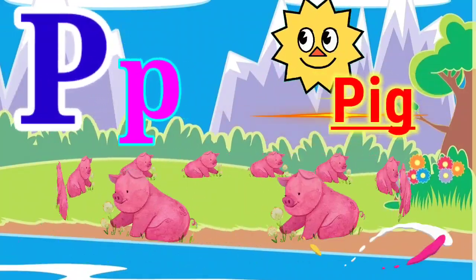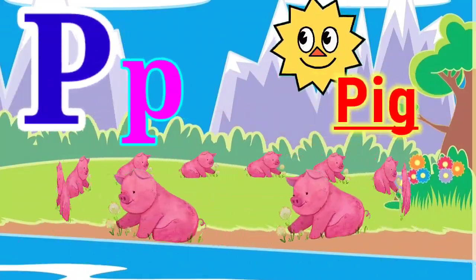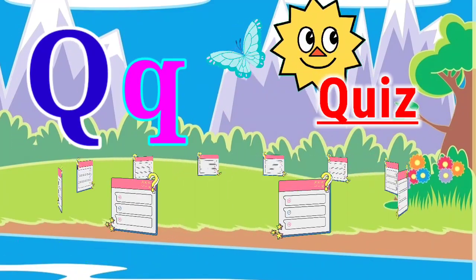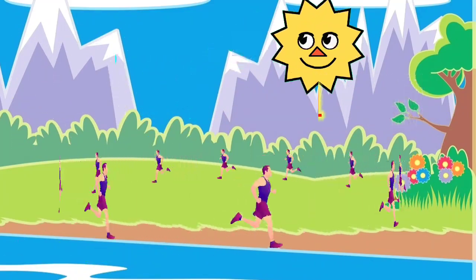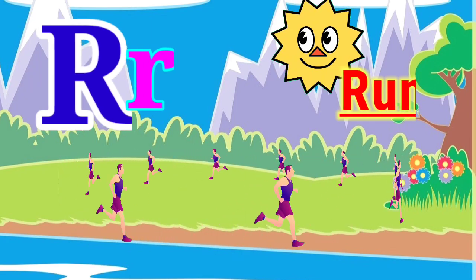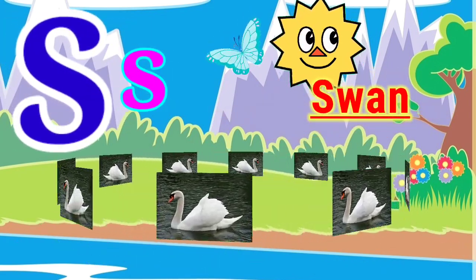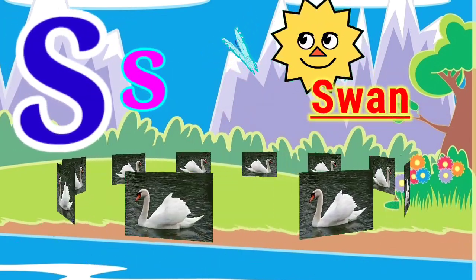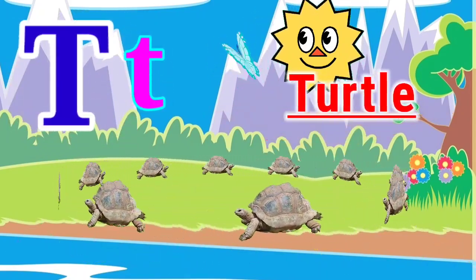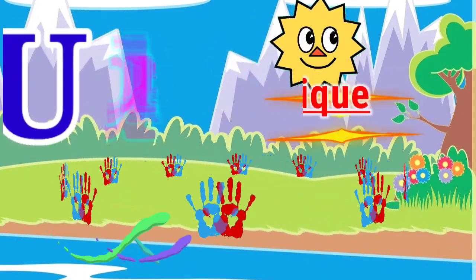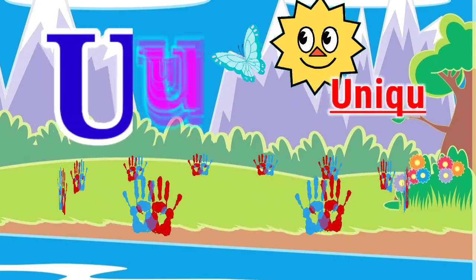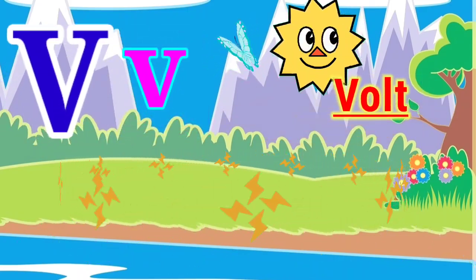O for omelette. P for pig. Q for quiz. R for run. S for sun. T for turtle. U for unique. V for bald.